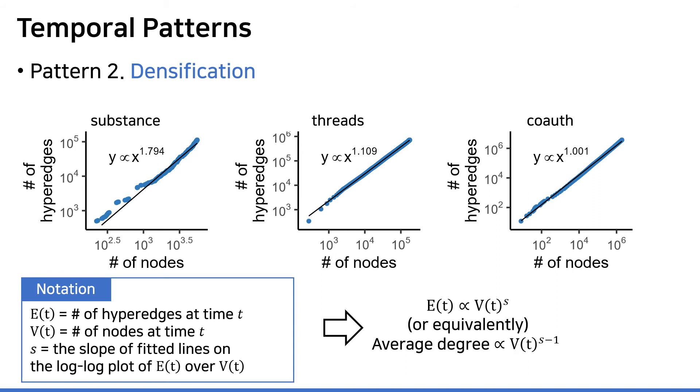For the second and third temporal patterns, we just revisited well-known dynamical patterns in real-world graphs, which are densification and shrinking diameter. Instead of investigating an ordinary graph obtained by the pairwise reduction, we investigate these patterns on real hypergraphs as they are, and then we confirm that this still takes place in this setting. Let me start with densification. When we plot the number of hyperedges versus the number of vertices on the log-log scale, we observe that the slope of the fitted line is strictly larger than 1 as seen in the figure. Doing some math gives us these relationships, and it can be translated into the rise of average degree of hypergraphs over time.